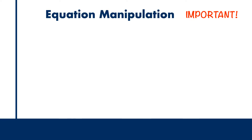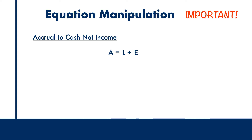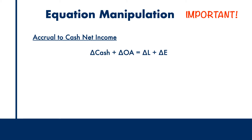Let's look at how we can manipulate the accounting equation to first convert net income from accrual to cash. Let's add a delta to both sides of the equation, which refers to change or increase or decrease in that value. We can further split the assets into cash and OA for other assets. Rearranging this equation yields delta cash equals delta L minus delta OA. We are going to use this equation as a guide to know whether to add or subtract the change in assets and liabilities.